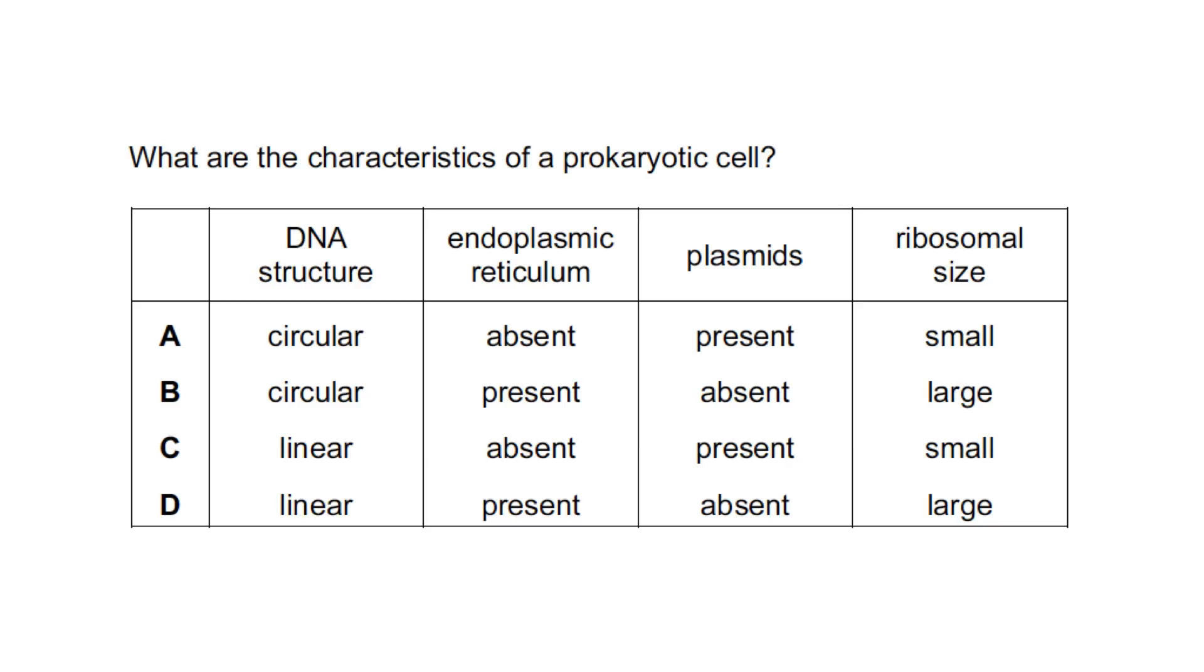What are the characteristics of a prokaryotic cell? You may develop your own method, but I prefer method of elimination, and I start from the one that I am very sure of, such as the endoplasmic reticulum. Prokaryotic cells do not have any membrane-covered organelles, endoplasmic reticulum, so the ones present are eliminated already. So it's either A or C, and the DNA, I know, is circular, not linear. So the correct answer is A.